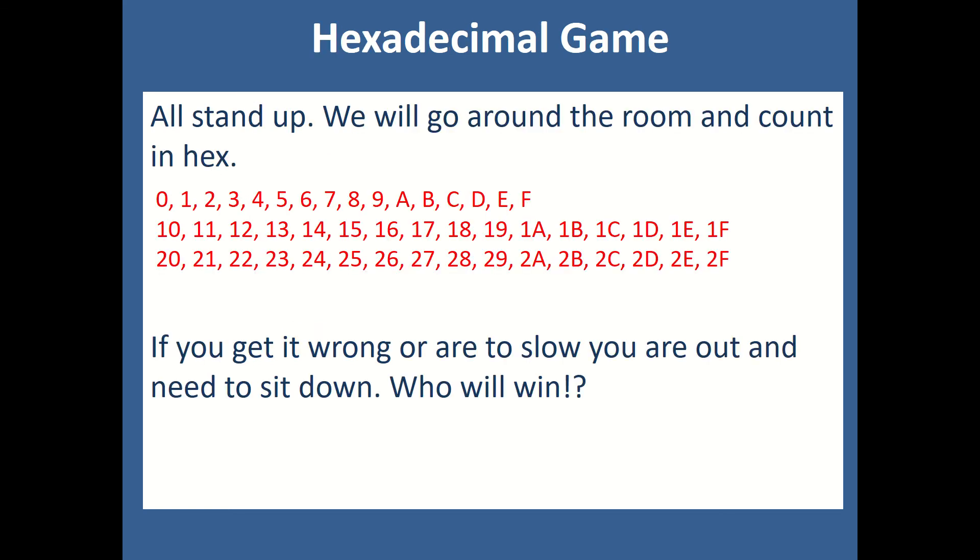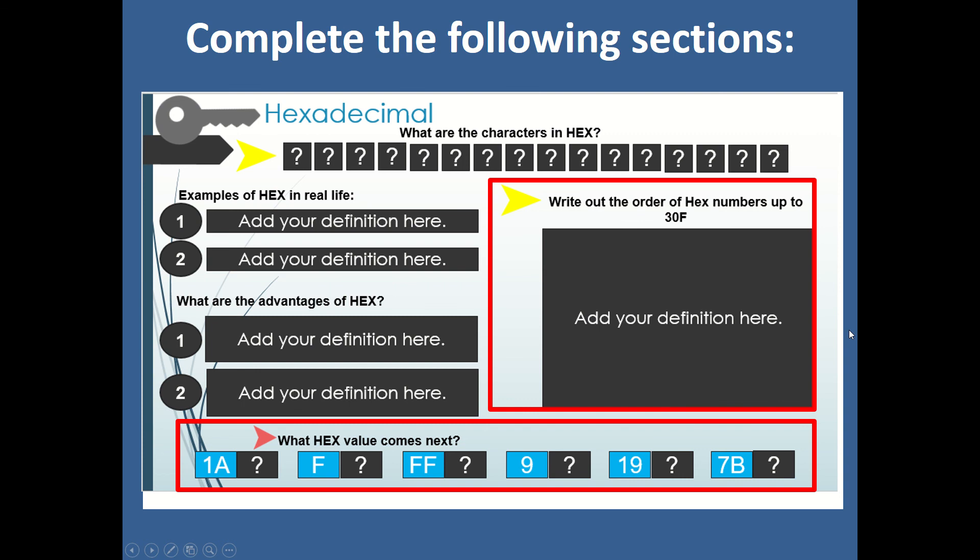We're going to play a hexadecimal game and we'll do this in class. If you're not in class, you're not going to be able to do this. But what I want you to try and do is see if you can add an extra 2 rows to our binary number, the 30s and the 40s. Please complete these two pages in your workbooks. Can you write all the numbers up to 30F? And then which values come next?